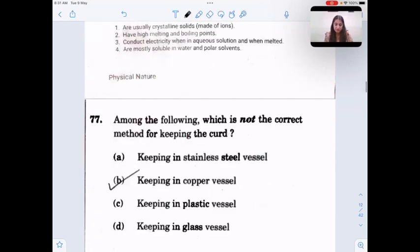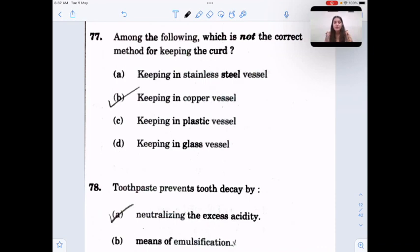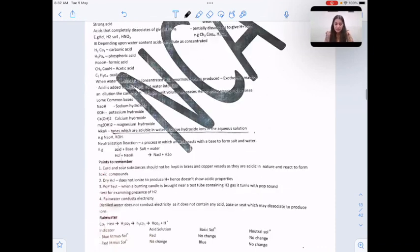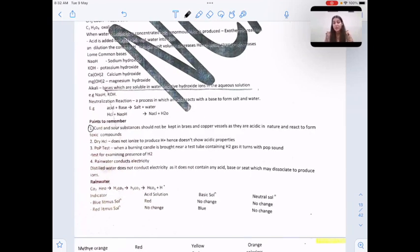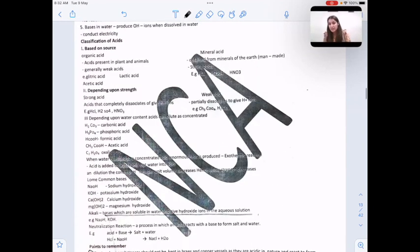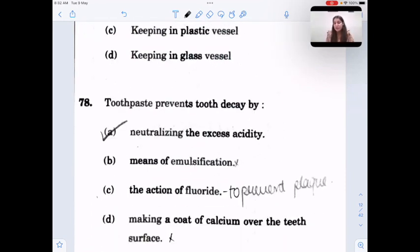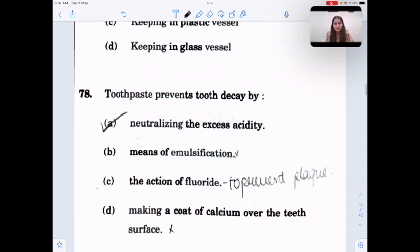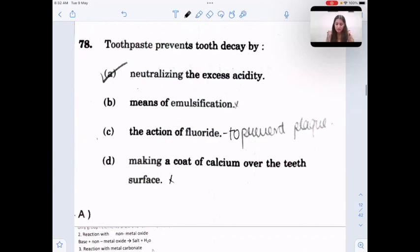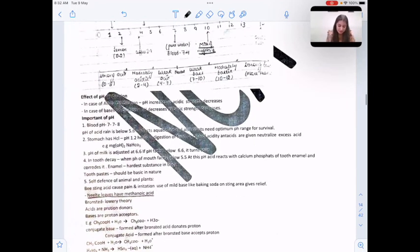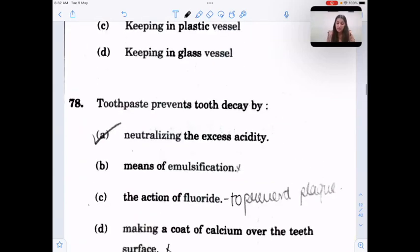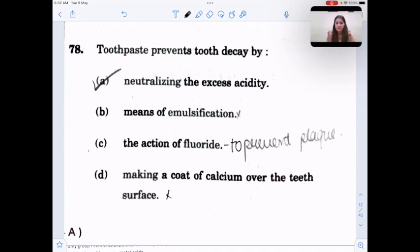Among the following, which is not the correct method for keeping the curd? Points to remember: curd and sour substances should not be kept in brass and copper vessels because they are acidic in nature and they can produce toxic compounds. Answer is keeping them in copper vessel. Next, toothpaste prevents tooth decay by neutralizing the excess acidity. In tooth decay, the pH of mouth reaches below 5.5 and hence the toothpaste available are basic in nature. So they neutralize excess acidity.